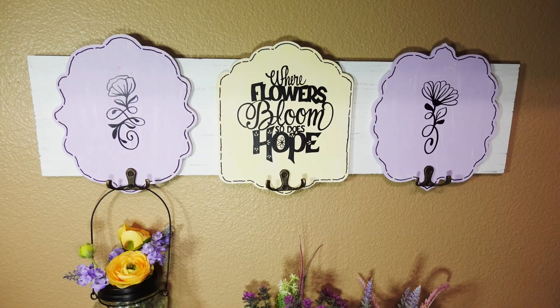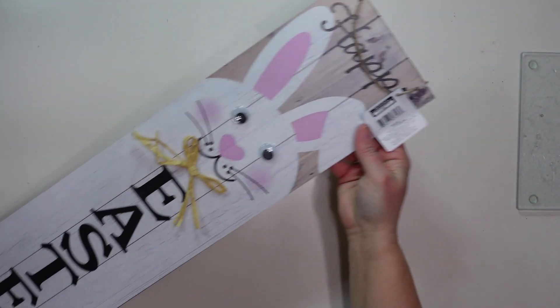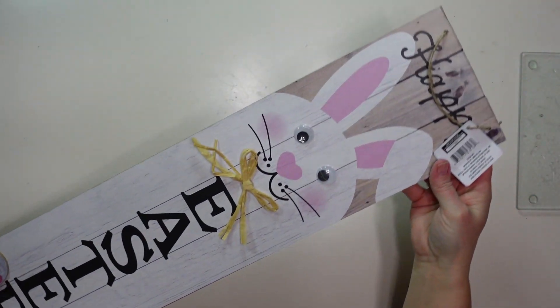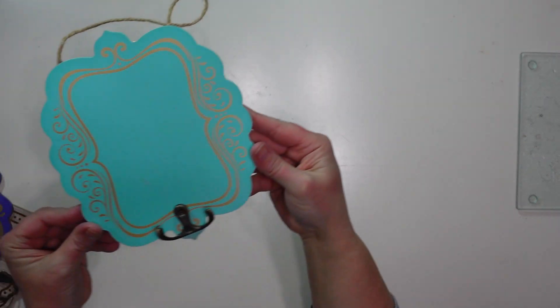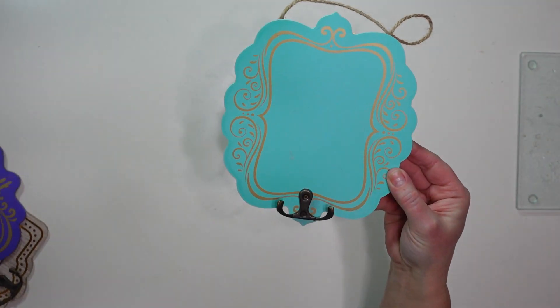For this project I will be making this set of wall hooks and using the Cricut to customize them for spring. The materials I will be using are this sign from Dollar Tree, it's one of the longer skinnier signs, as well as three of these wall hooks that I also picked up at Dollar Tree.